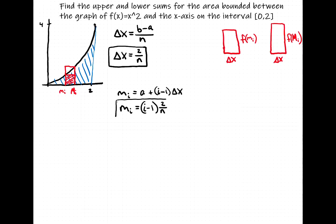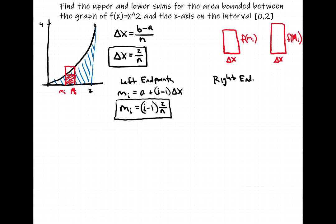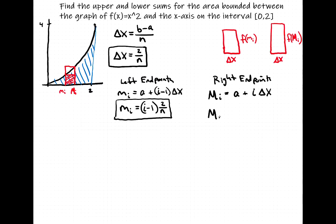So those are our left endpoints. For the right endpoints, which give us our upper sum, we use capital M sub i. Those are equal to a plus i times Δx, or in this case 0 plus i times (2/n), which equals 2i/n.